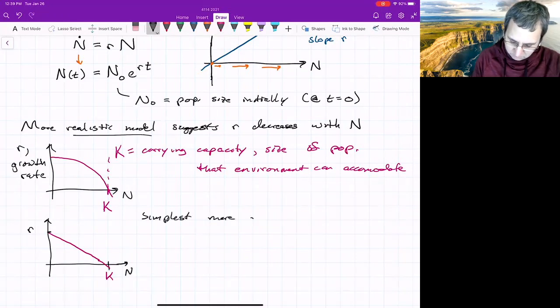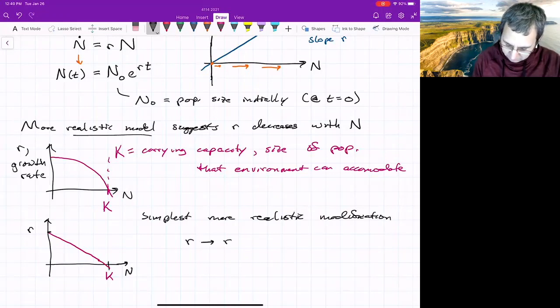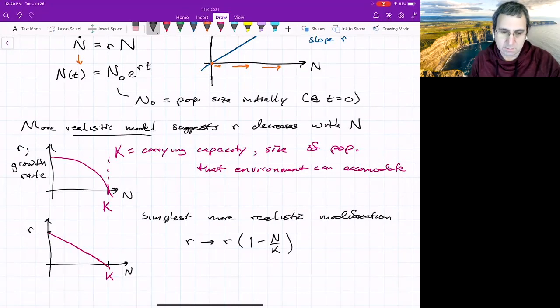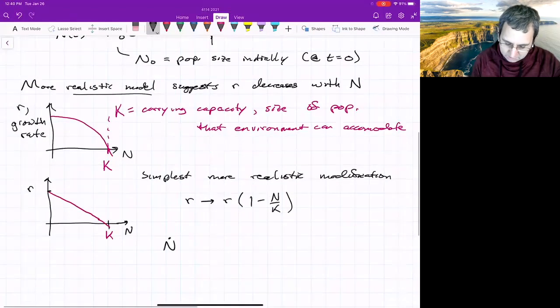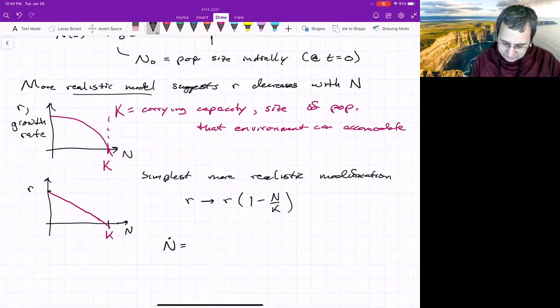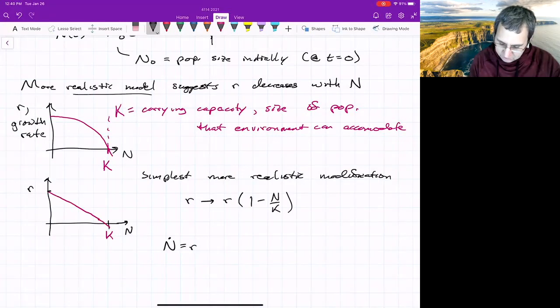So this is the simplest of the more complicated models. So the simplest more realistic modification would be take R and instead do R times 1 minus N over K. So that means that N dot equals instead of R times N it's R times 1 minus N over K.